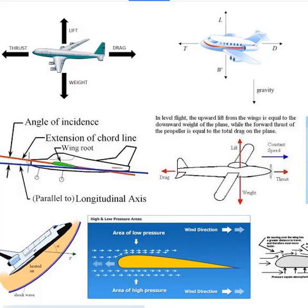A high pressure area below the wing always moves toward a low pressure area above the wing. And so the high pressure lifts the plane into the air.